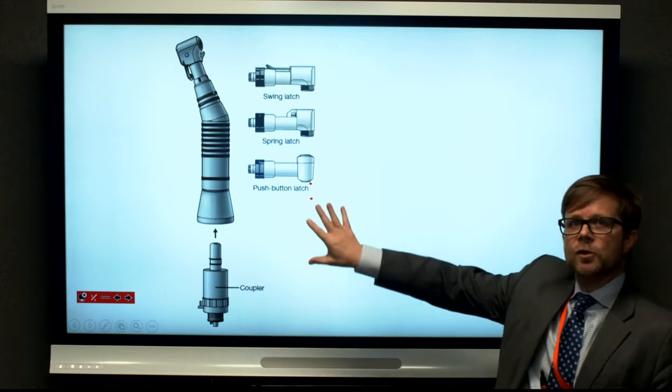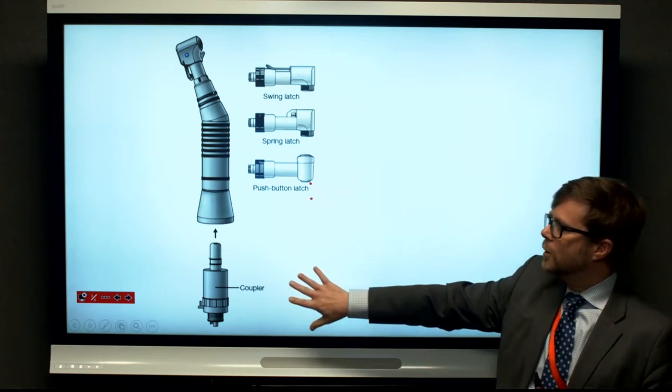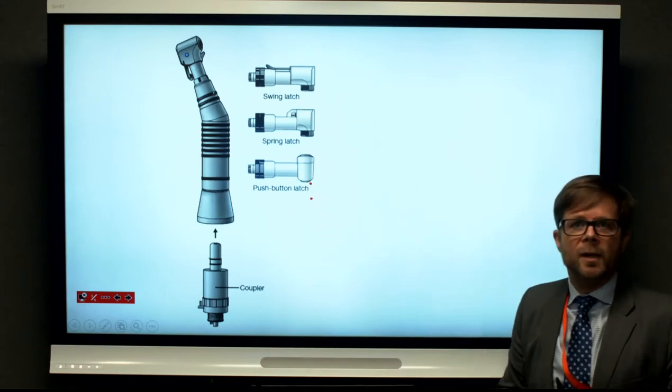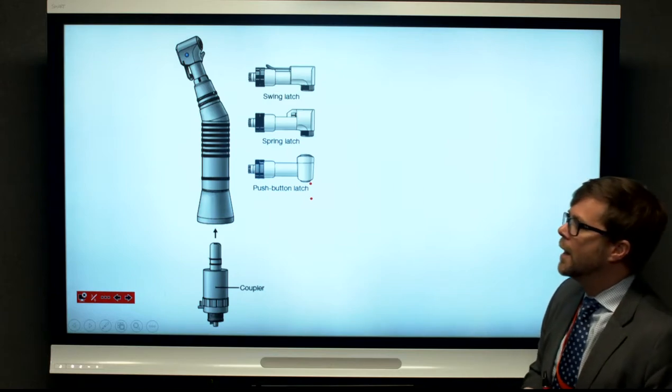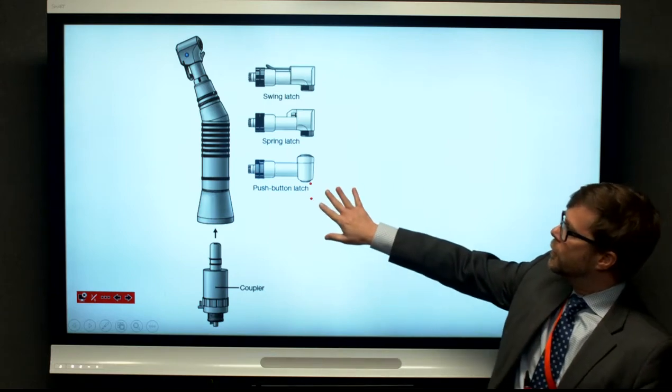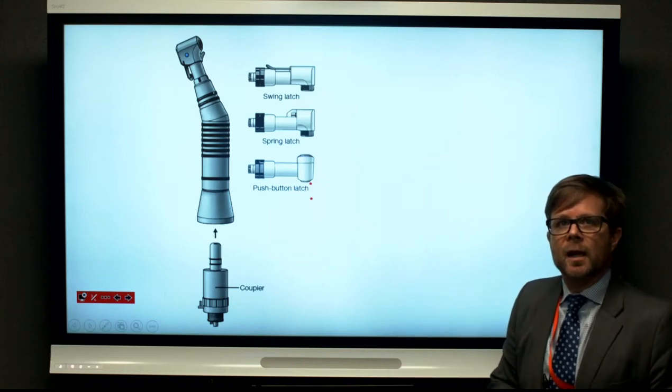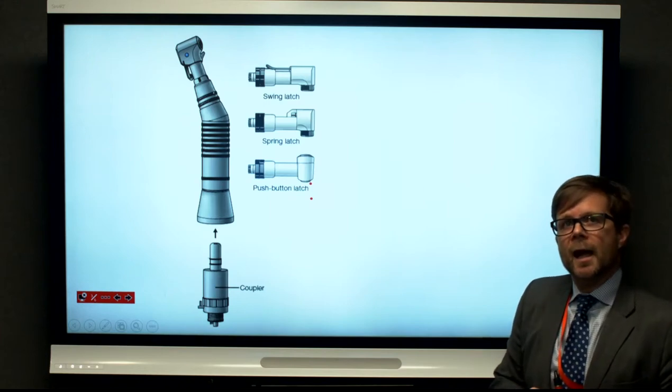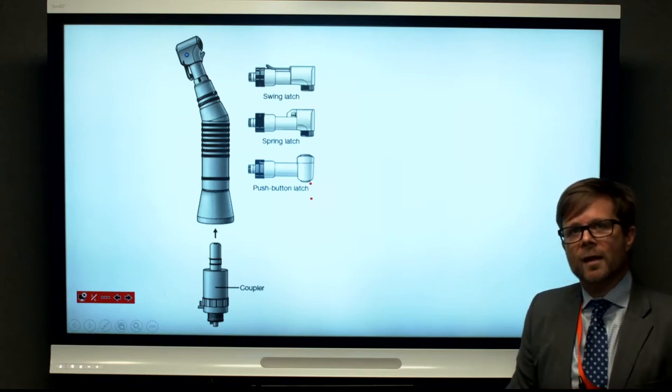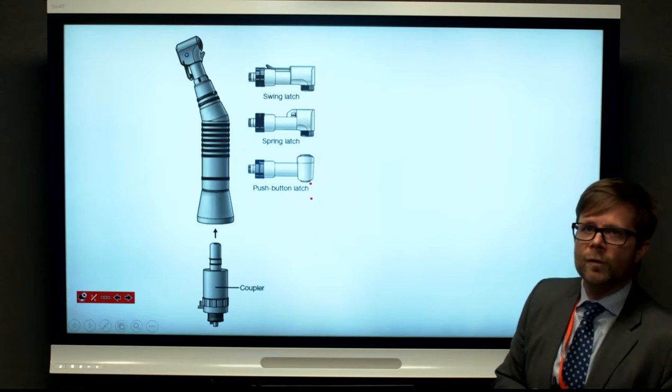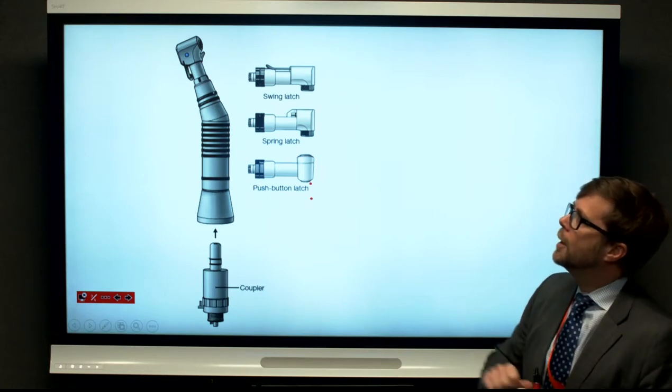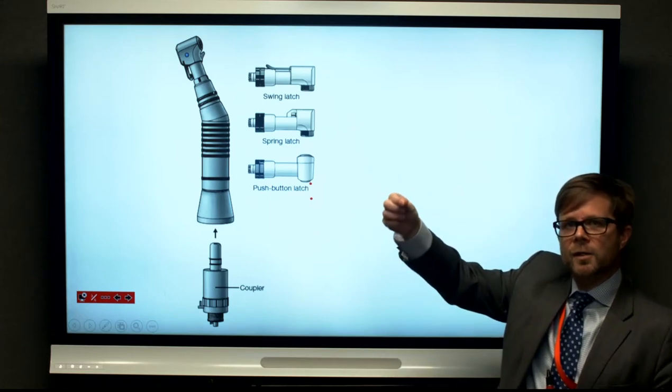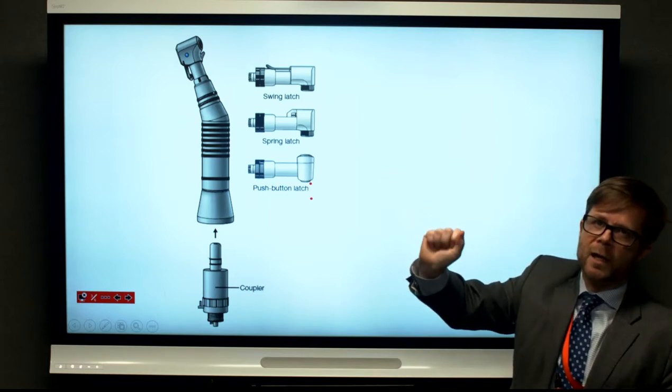So just to introduce you to the slow speed handpiece, there's a coupling or coupler, the handpiece itself. Now the head of the handpiece can vary depending on what sort of handpiece you are using. We've got three here. The top is the swing latch grip head, and you'll find this on the prophy heads that we have in the simulation lab. When you're doing prophylaxis with a prophy cup, you'll use the swing latch. That's a manual latch where you swing the latch to one side, insert the burr into the chuck, and then swing the latch back again.